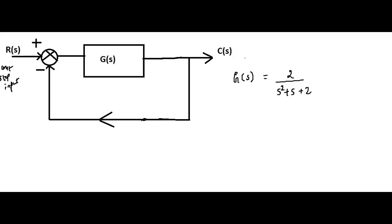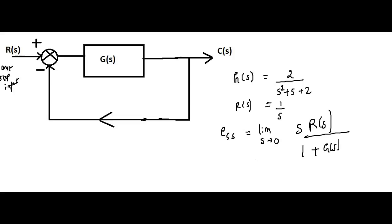Since we are giving a step input, what we get at the output is the step response. We have R(S) = 1/S as the step input. We can calculate the steady state error using the formula: ESS = limit as S→0 of S·R(S) / (1 + G(S)). Substituting, we get limit as S→0 of S · (1/S) / (1 + G(S)), which simplifies to 1 / (1 + G(S)) with G(S) = 2/(S²+S+2).